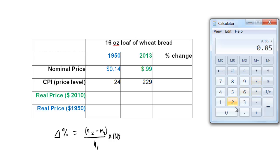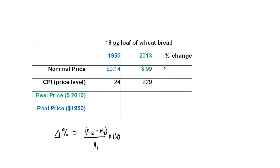Divided by 0.14, equals 6.07. Still need to multiply by 100 to put it in percent form. We've got a 607% increase. Now, price of bread, nominal price went up 600-some percent.